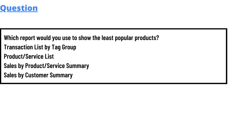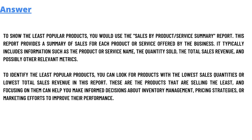We have some options here: transaction list by track group, product and service list, sales by product and service summary, and sales by customer summary. The answer to the question is: to show the least popular products, you would use the sales by product service summary report.